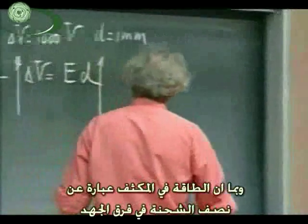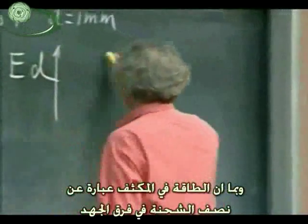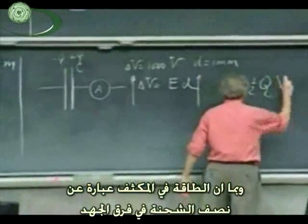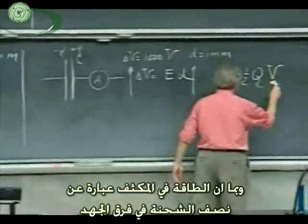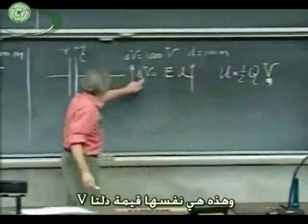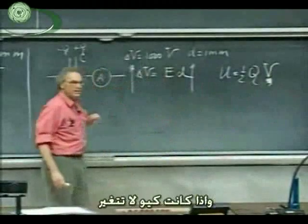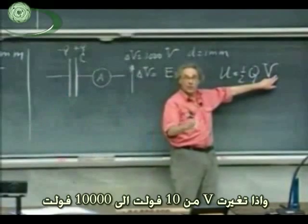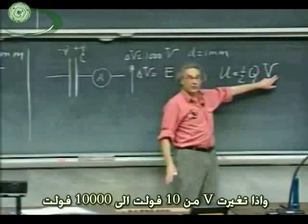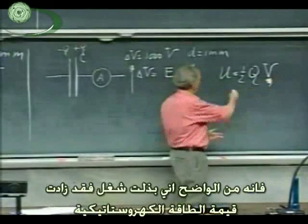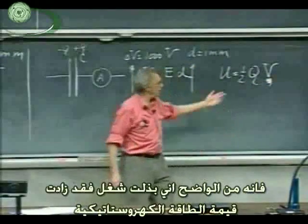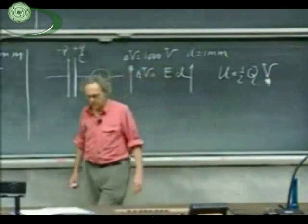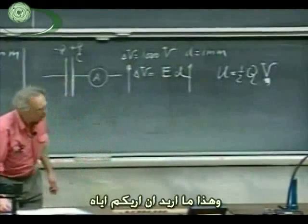Since the energy in the capacitor is one-half Q times the potential difference V — this V is the same as delta V — and if Q is not changing, but V goes from 1,000 volts to 10,000 volts, it is very clear that I have done work. I have increased the electrostatic potential energy, and this is what I want to show you.